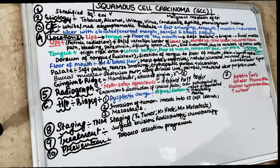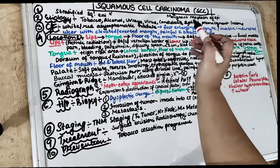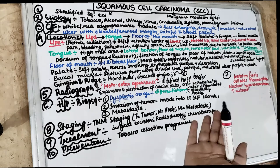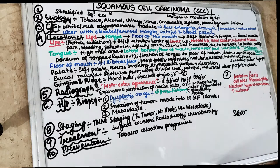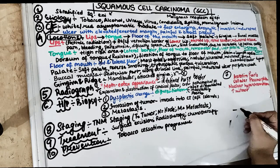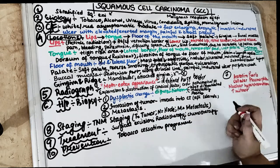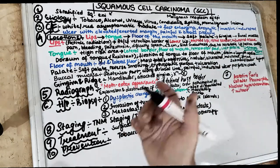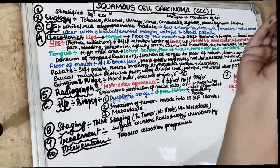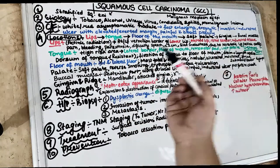Before we get started, make sure you subscribe to our channel and click on the bell icon. Talking about squamous cell carcinoma: carcinoma is a term given for the malignant neoplasm of epithelial tissues. Sarcoma is a malignant neoplasm of connective tissue. If we use the OMA word, that means it is a benign cancer. So carcinoma means a malignant neoplasm of the epithelium, and squamous cell carcinoma means a carcinoma — a malignant neoplasm of the stratified squamous epithelial cells.